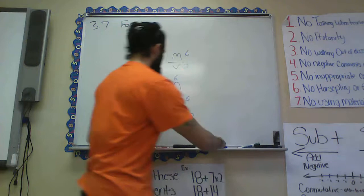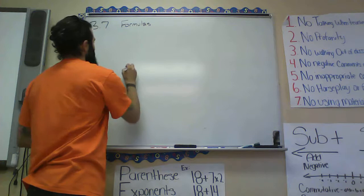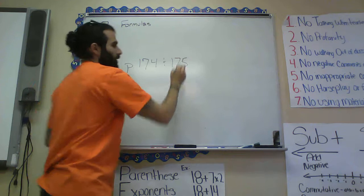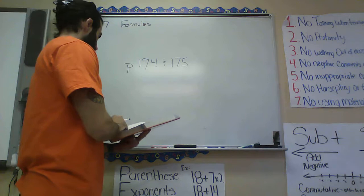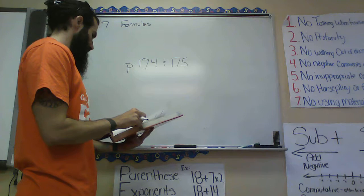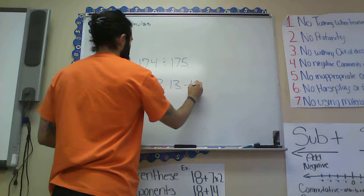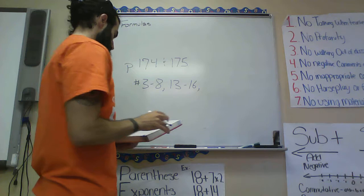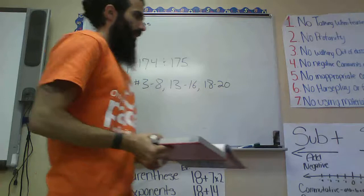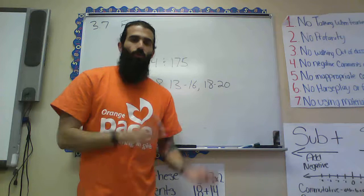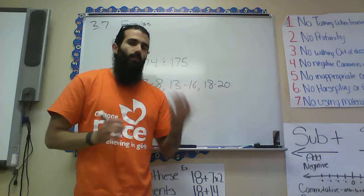The problems you're going to be doing are on pages 174 and 175: numbers 3 through 8, 13 through 16, and 18 through 20. It's not a lot of problems today. If you finish early, go back and review your 3.3 and 3.4 — single variables in multi-step equations and single variables on both sides of the equation. Tomorrow morning we will have a quiz. Enjoy!